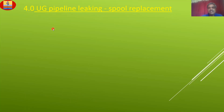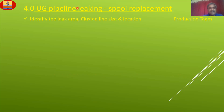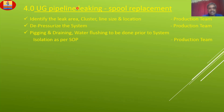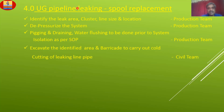This is now UG (underground) pipeline leaking and spool replacement. Identify the leak area, cluster, line size and location — this should be done by the production team. Depressurize the system, pigging and draining, water flushing to be done prior to system isolation as per SOP by the production team. Excavate the identified area and barricade to carry out cold cutting of the leaking line pipe — Civil Team. Inspection by QAQC.